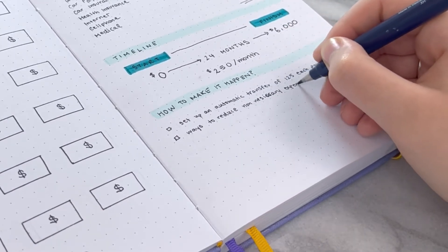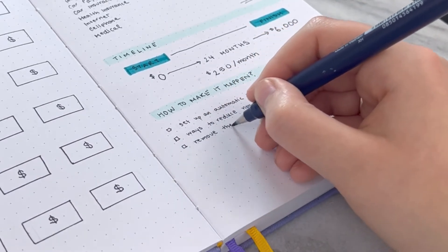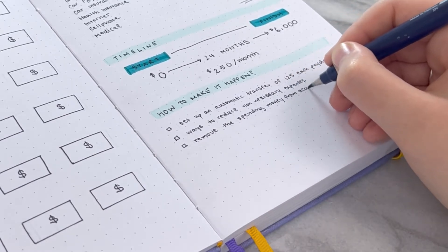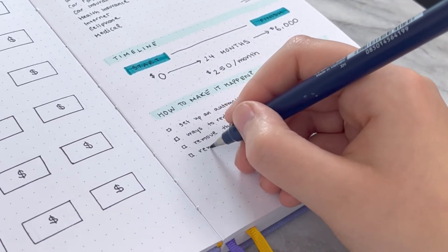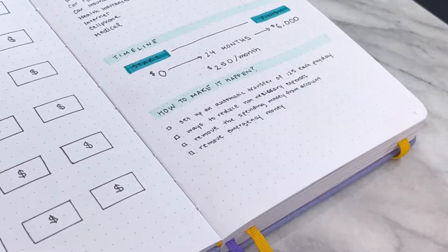Then you can also have things maybe to reduce non-necessary expenses in the short term. Other things could be removing the spending money from your account. Maybe it's too tempting having it in there and just pulling it out would be something you could do as well.